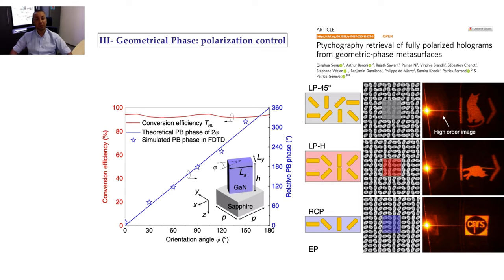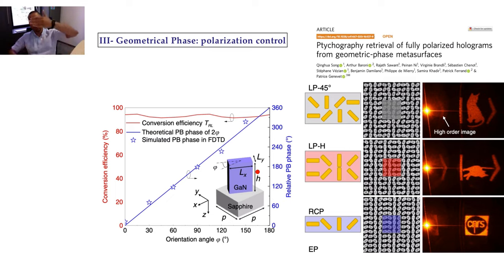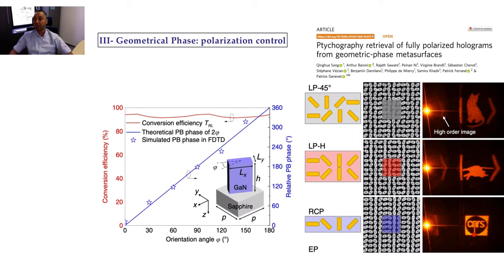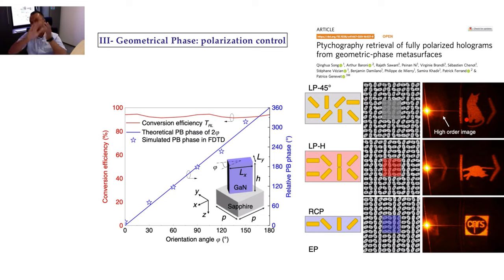The third approach is called the geometrical phase or Pancharatnam-Berry phase, based on polarization control. You design a resonator that works like a half-wave plate. Then you simply rotate this nanoresonator: rotating from 0 to 180 degrees covers the full 2π phase. This is very interesting because by shining light with a specific polarization, and by orienting the nano element at a specific angle and shining light again, you can control the full properties of light across a very flat surface — about one micrometer — instead of a bulky lens. This is truly a revolution.